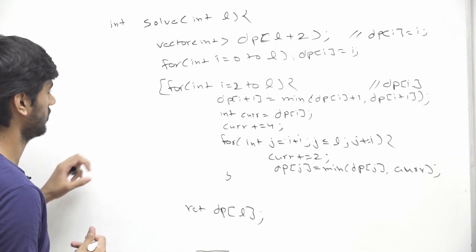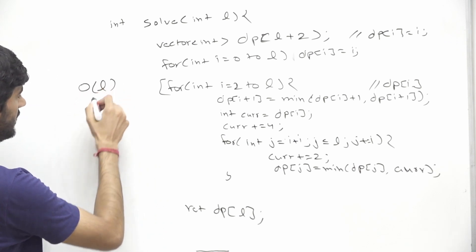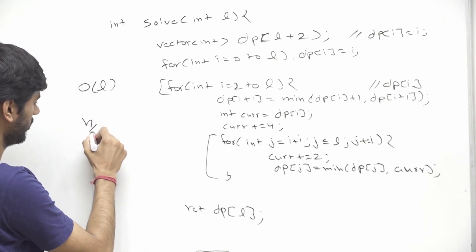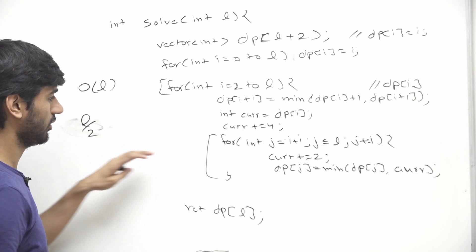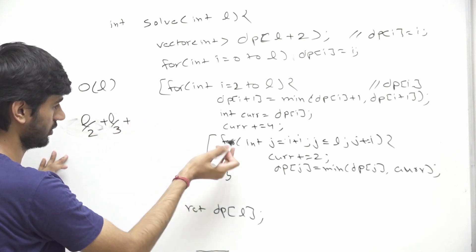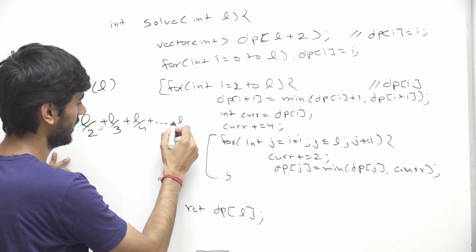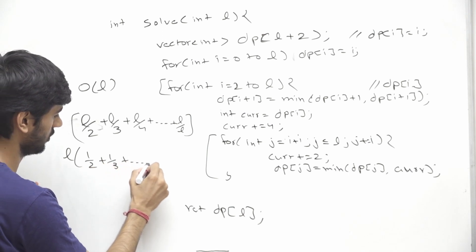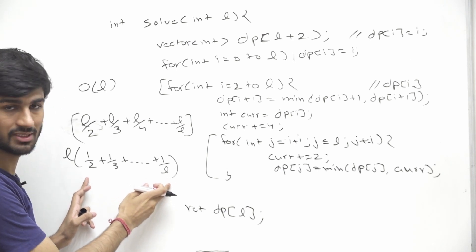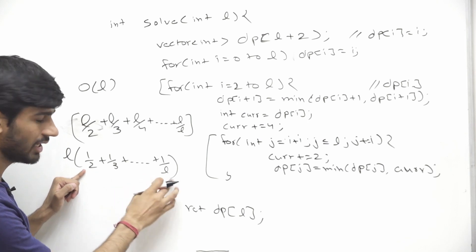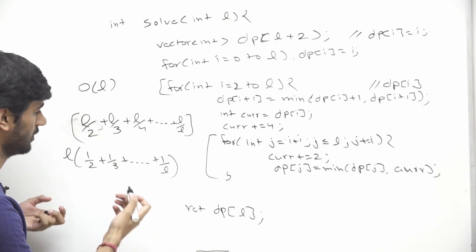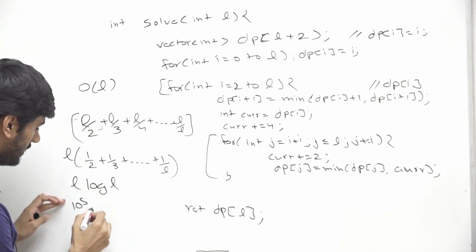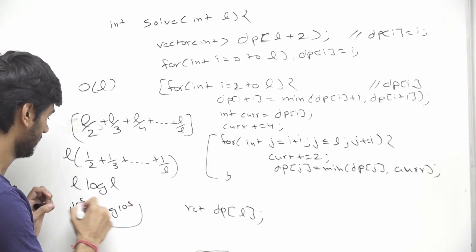Now let's talk about the time complexity. The outer for loop iterates l times. For the inner loop, when i equals 2 it iterates l/2 times, when i equals 3 it iterates l/3 times, when i equals 4 it iterates l/4 times, and so on. Taking l common, we get the harmonic series: 1/2 + 1/3 + ... + 1/l, which approximates the integral of 1/x from 2 to l, giving log(l). So total time complexity is O(l log l). The maximum value of l is 10^5, so this should be accepted within the constraints.